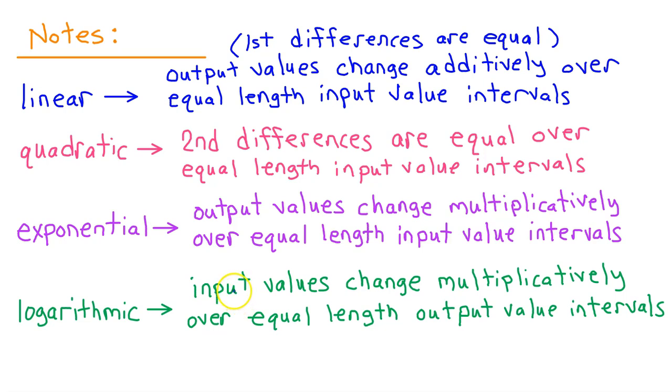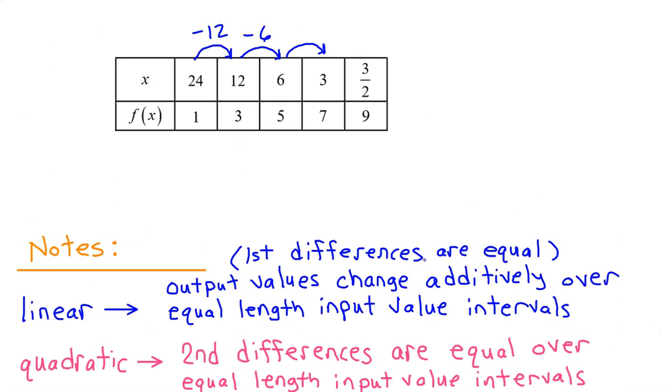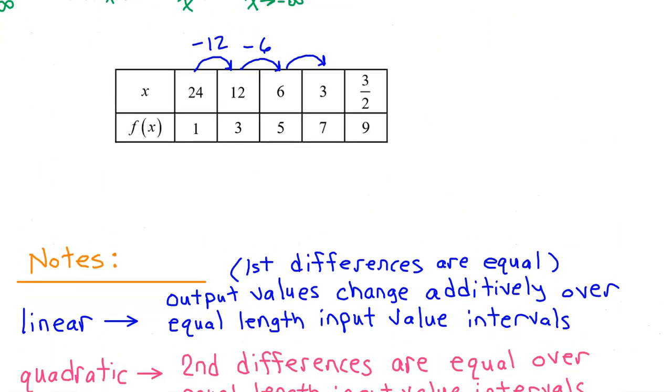Do we have input values changing multiplicatively over equal length output value intervals? So are these input values changing multiplicatively? Sure, 24 times 1 half is 12. 12 times 1 half is 6. 6 times 1 half is 3. And 3 times 1 half is 3 halves. So the input values change multiplicatively.